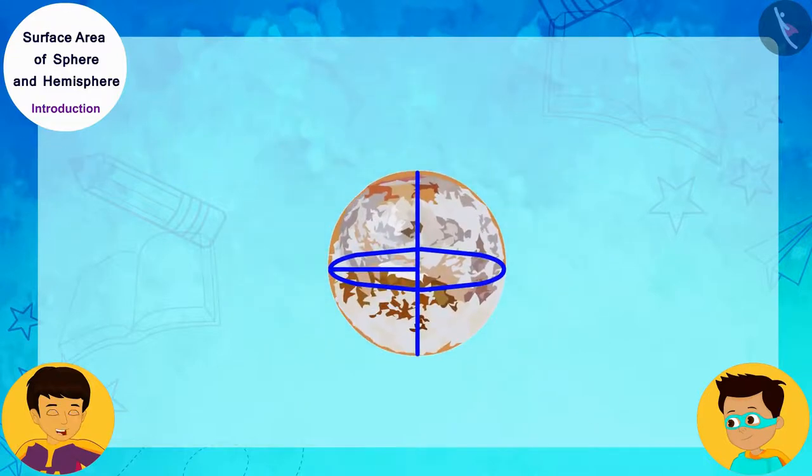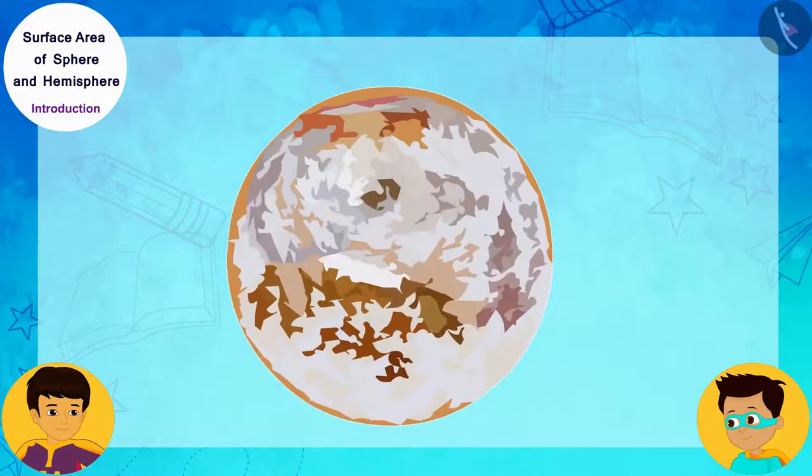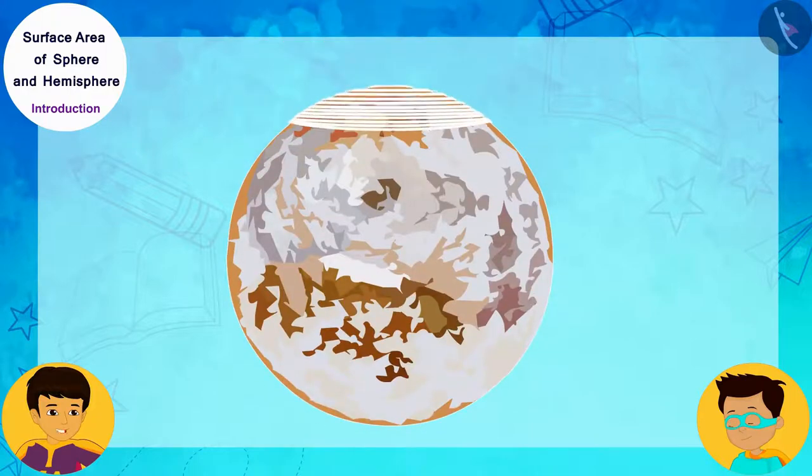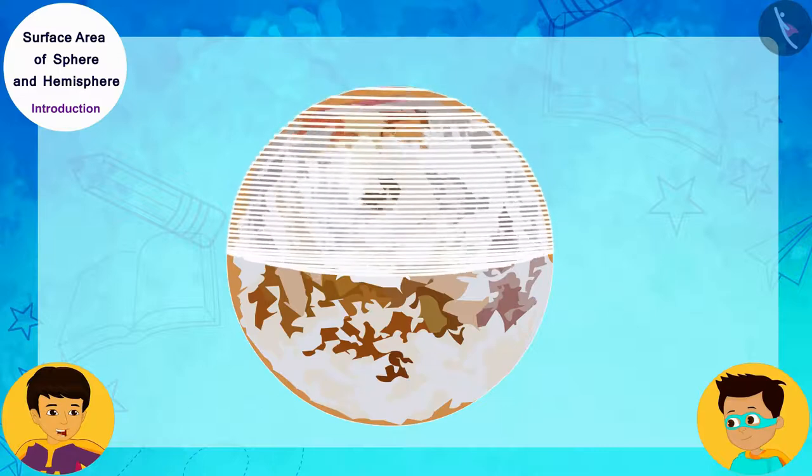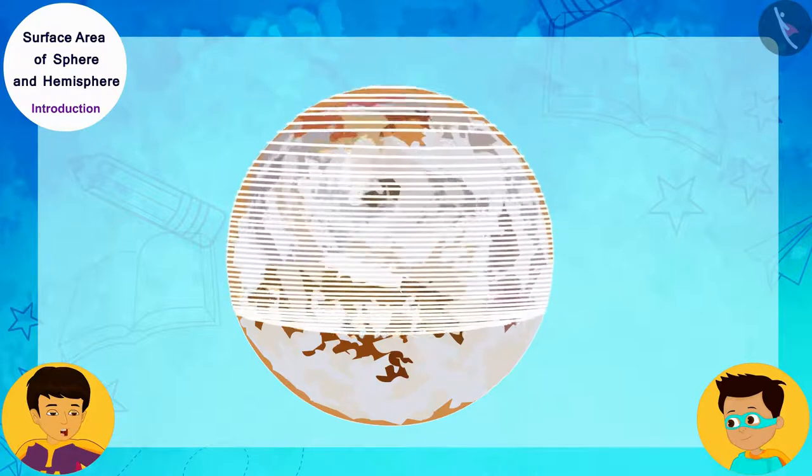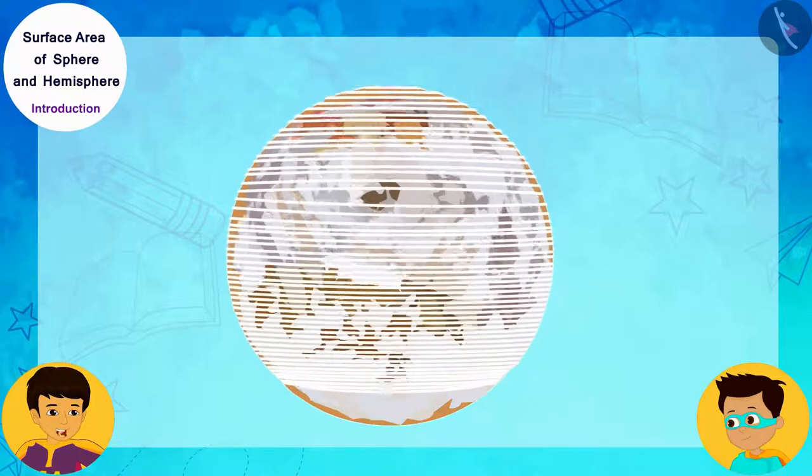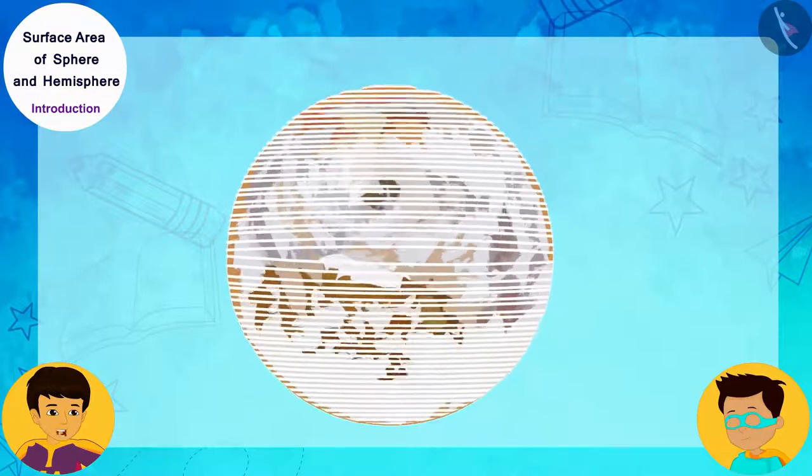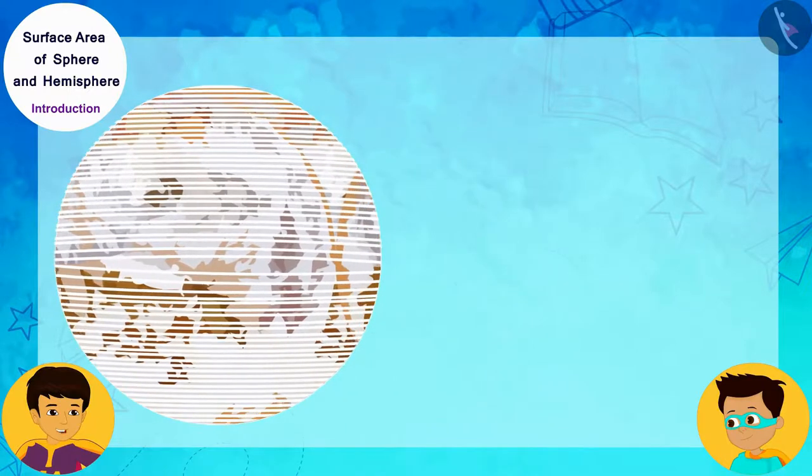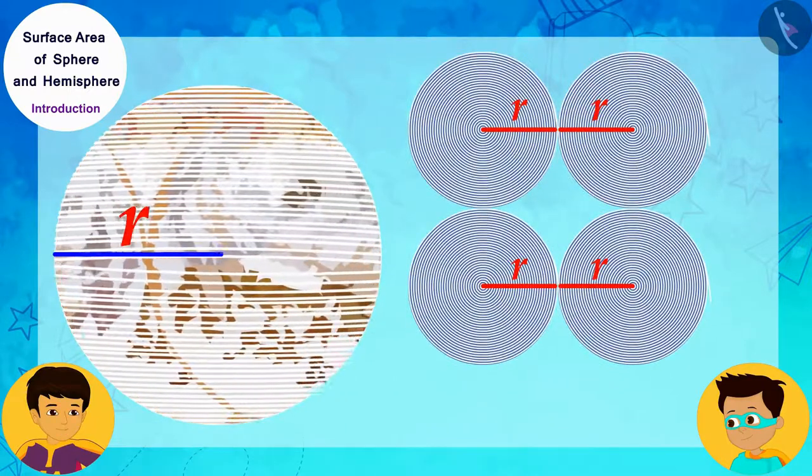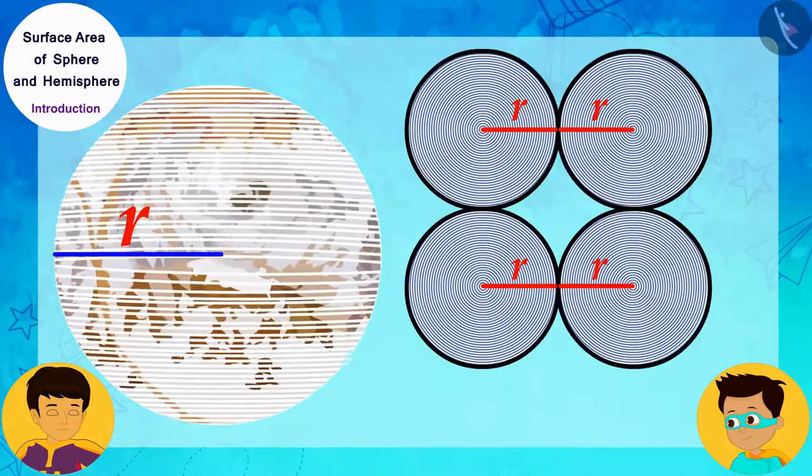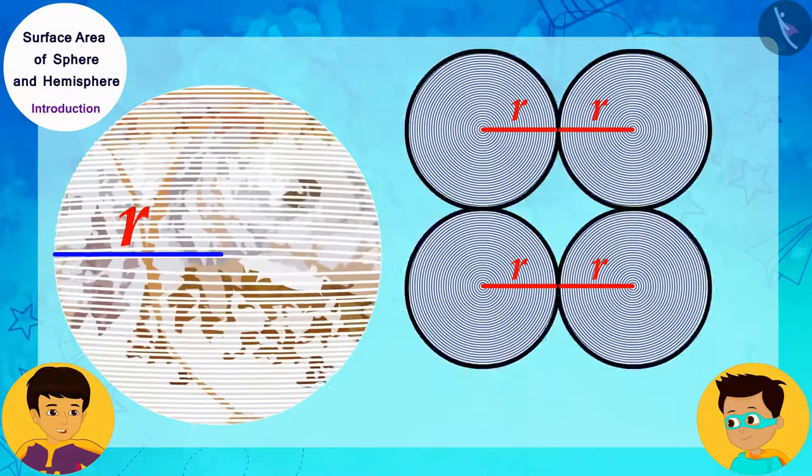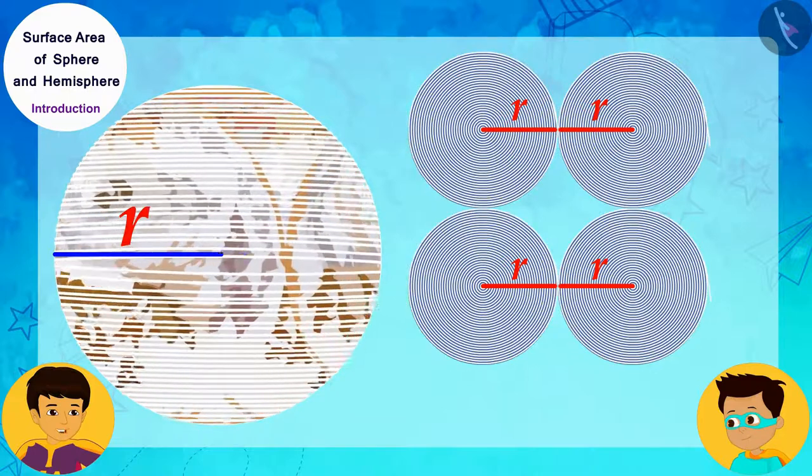Suppose the radius of this spherical sweet is R. Now, imagine if we wrap a string on this sphere in this way and keep wrapping it on the sphere till it covers the sphere completely. Now, on a paper, if we make four circles with radius R of the sphere in this way...